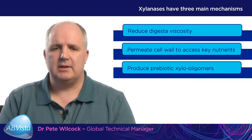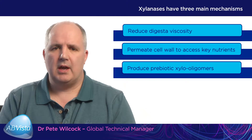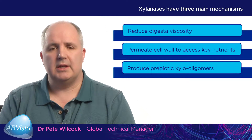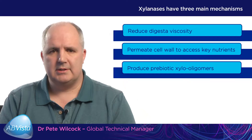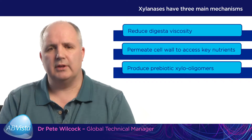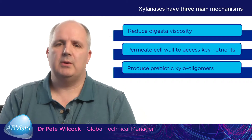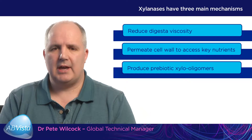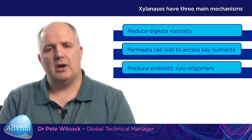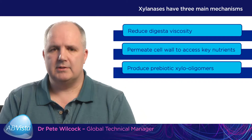The second mechanism is the ability of the xylanase to break down the insoluble arabinoxylans in the cell wall. Effectively, it's punching holes in the cell wall, allowing the endogenous enzymes of the animal itself to break down starch and protein within that plant cell wall.